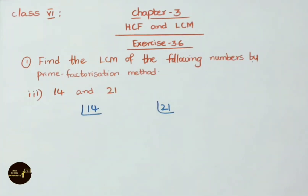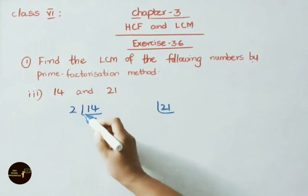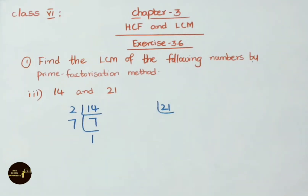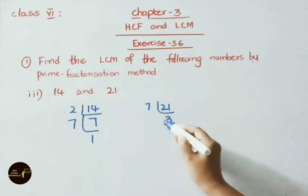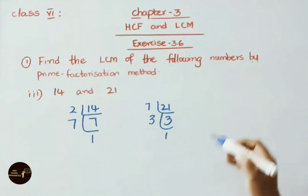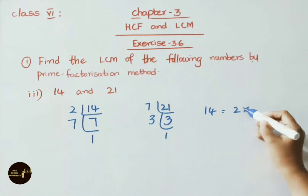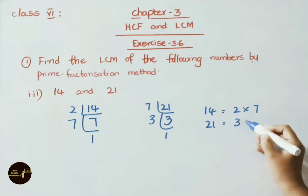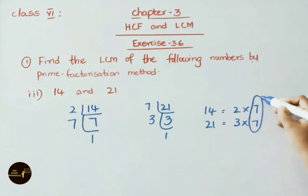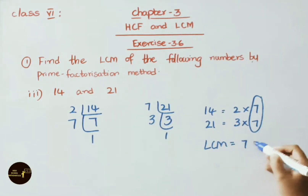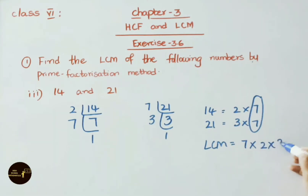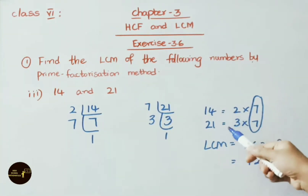Third sum: find LCM for 14 and 21. For 14: 2 × 7 = 14, then 7 × 1 = 7. For 21: 7 × 3 = 21, then 3 × 1 = 3. Prime factors for 14 = 2 × 7. Prime factors for 21 = 3 × 7. Common factor is 7. So multiply all: 7 × 2 = 14, 14 × 3 = 42. Therefore LCM for 14 and 21 is 42.